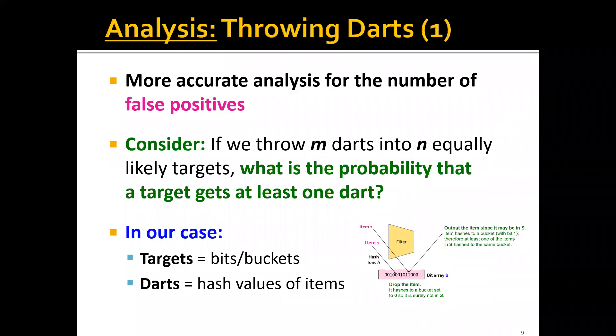Next, let's perform more accurate analysis for the number of false positives. We can actually think of hashing items into buckets as throwing darts into targets. Let's say that if we throw m darts into n equally likely targets, then the first question we want to ask is: what's the probability that one target gets at least one dart? In our case, the targets are the bits of buckets in the algorithm, and the darts are the hash values of the items.